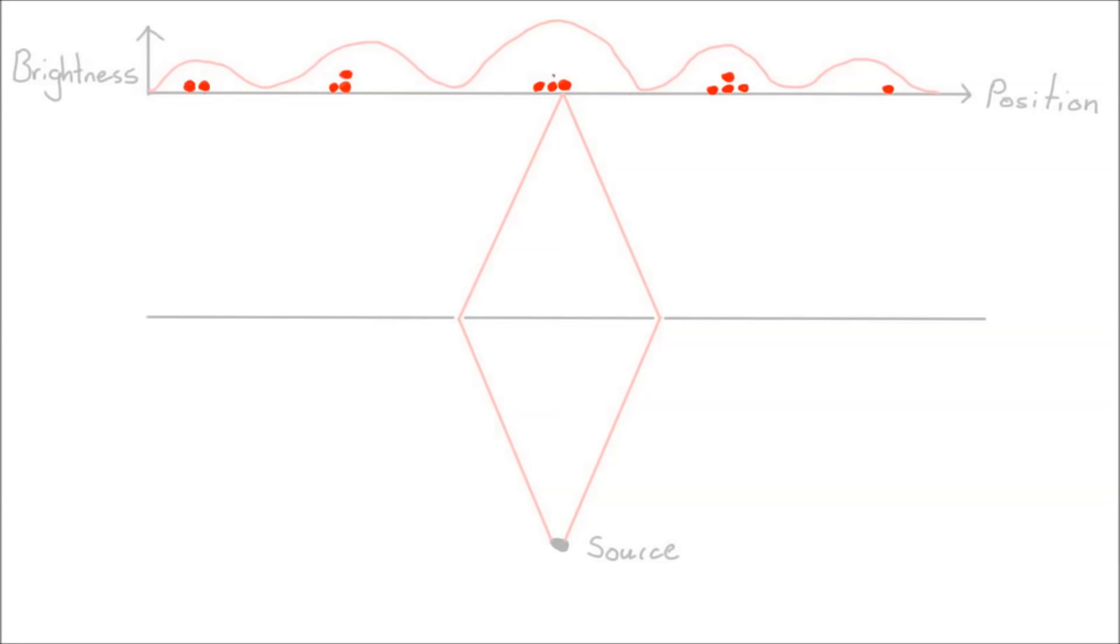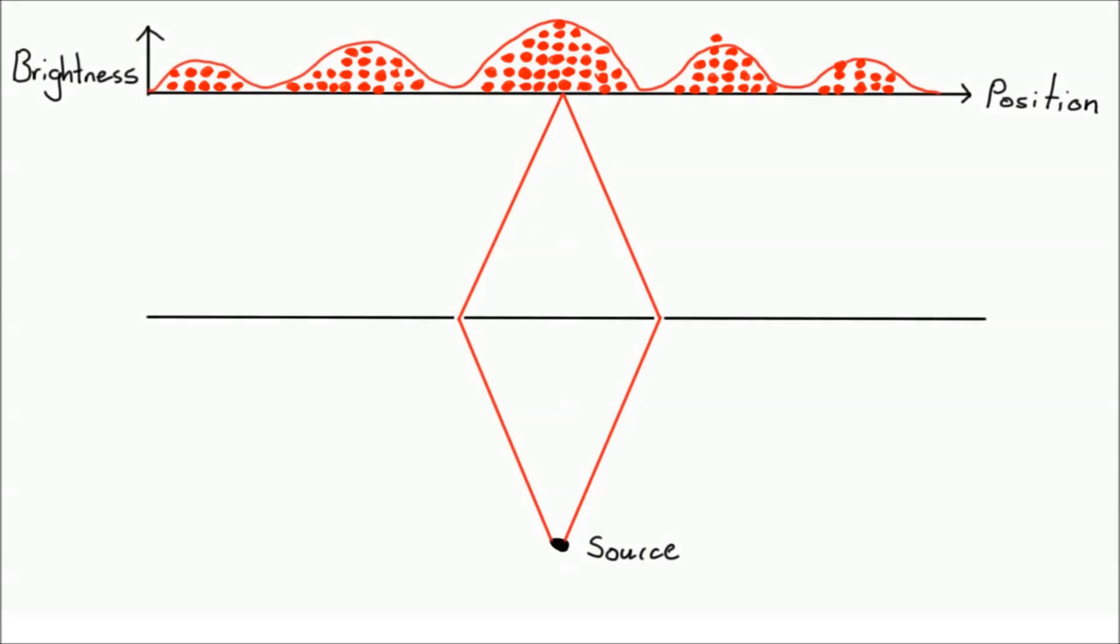Lo and behold, an identical pattern appears. This is incredible, because only one photon passed through the double slit setup at a time. In fact, the only possible explanation is that each photon interfered with itself as it passed through the slits. In some sense, each photon passed through both slits before deciding where it would arrive on the screen.